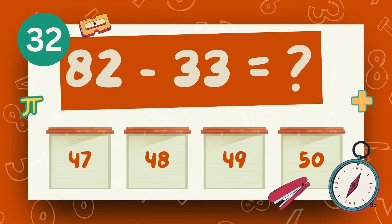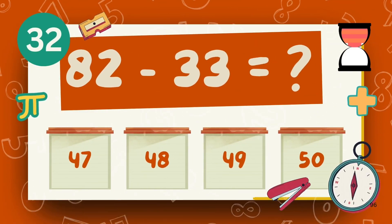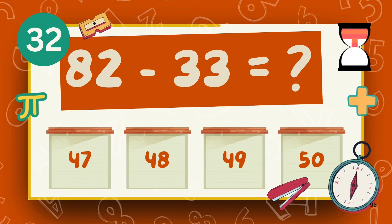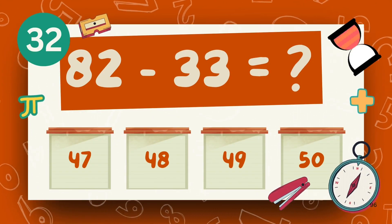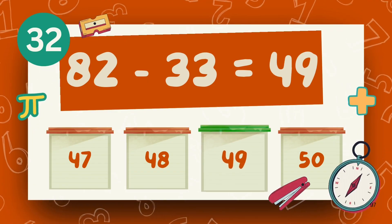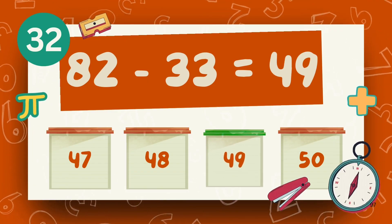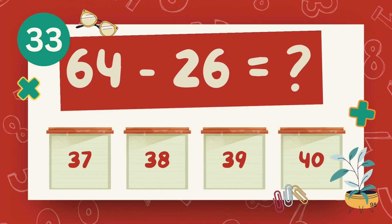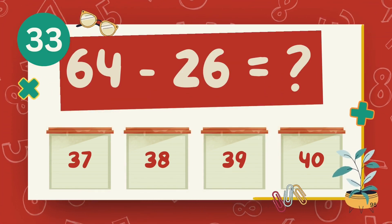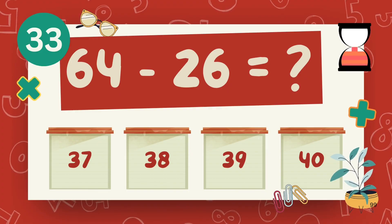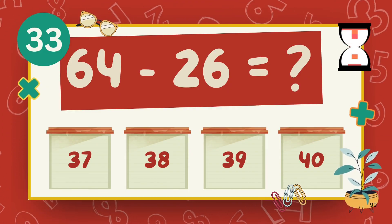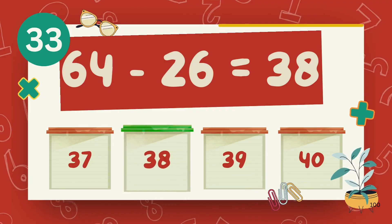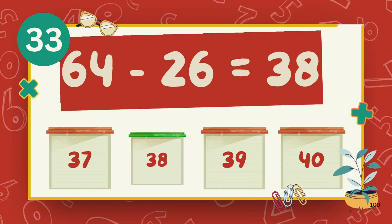What is eighty-two minus thirty-three? The answer is forty-nine. What is sixty-four minus twenty-six? The answer is thirty-eight.